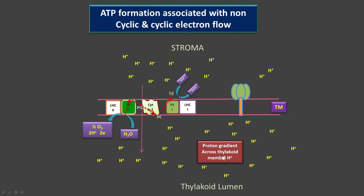When there is a proton gradient across the membrane, the pH in the thylakoid lumen is lower because proton concentration is higher there. When protons move through ATP synthase from the thylakoid lumen to the stroma, the energy is conserved in the form of ATP molecules — ADP + Pi plus the gradient energy produces ATP. This is the basis of how cyclic and non-cyclic electron traveling is related to ATP formation.